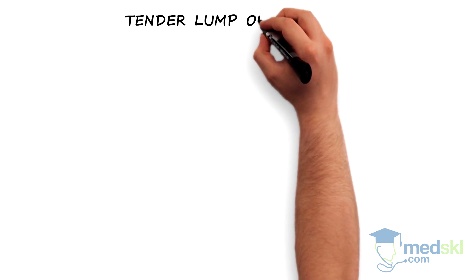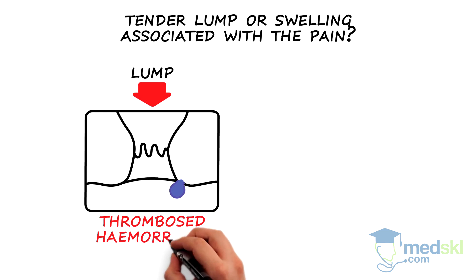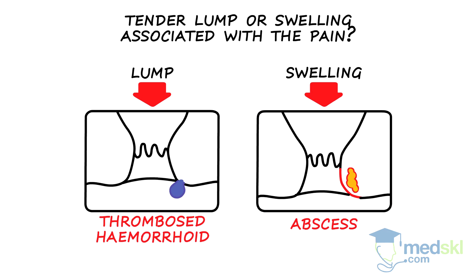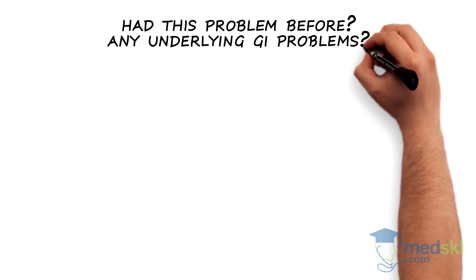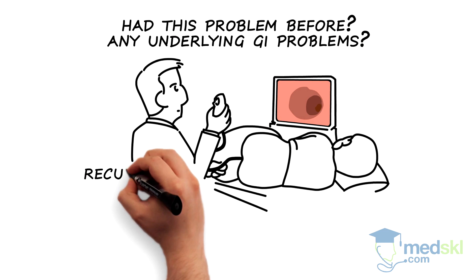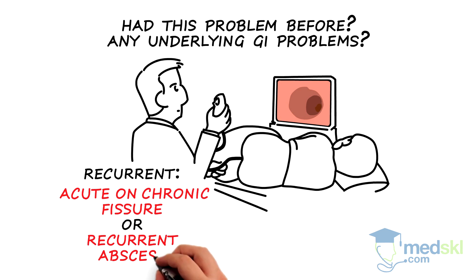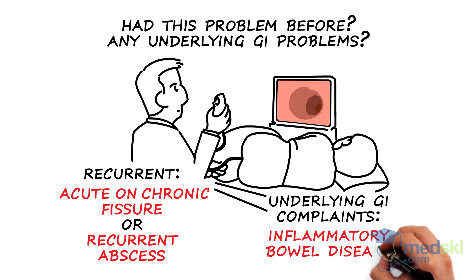Is there a tender lump or swelling associated with the pain? A large lump suggests a thrombosed hemorrhoid, while a tender swelling suggests an anorectal abscess. Have they ever had this problem before, and do they have any underlying GI problems? If this is a recurrent problem, it may be an acute on chronic fissure, or a recurrent anorectal abscess associated with a fistula. If they have underlying GI complaints, this could be associated with inflammatory bowel disease and require further investigations.